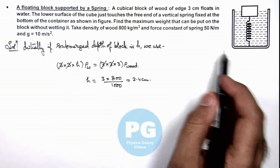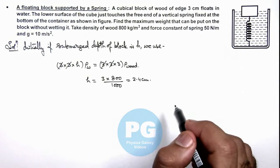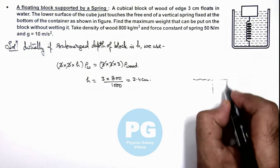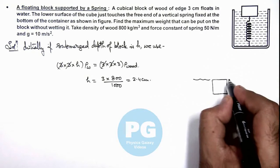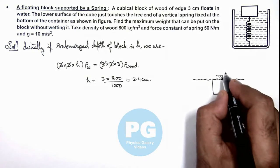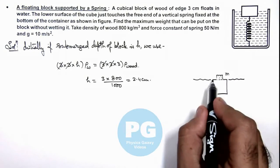Now when we place small mass m onto the cube so that it will be completely submerged in the liquid, at this stage which you can see this is a mass m which are placed on it.